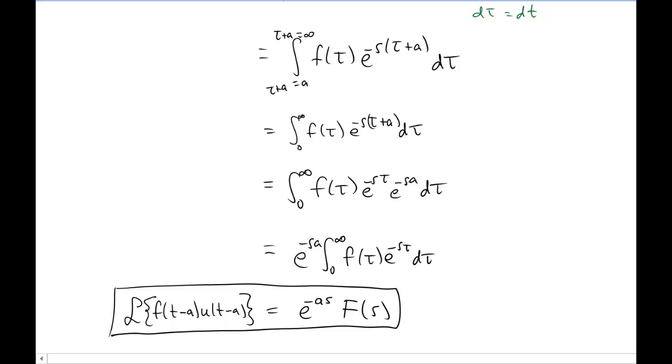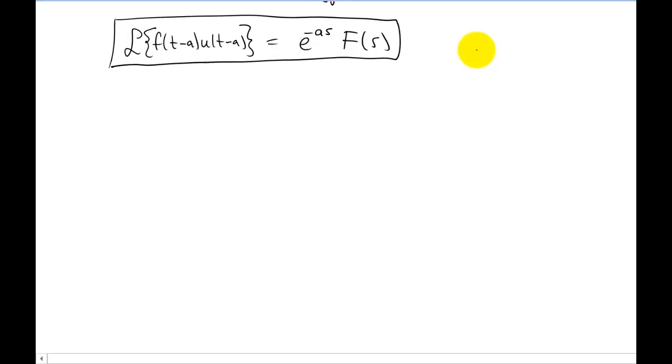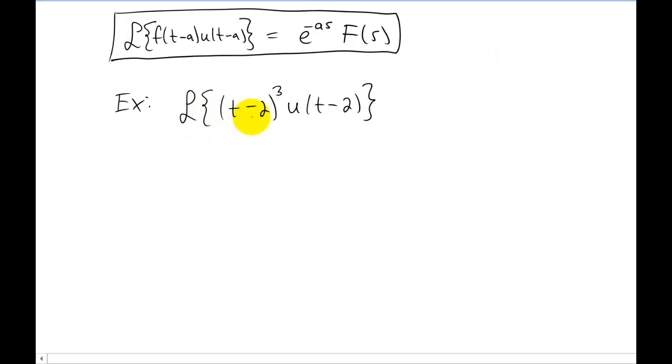Let's do a quick example on how to actually use this new formula we have. Let's start by finding the Laplace transform of t minus 2 quantity cubed times the step function with the t minus 2 in there. Now obviously since we have a step function times another function right here, this is going to be the entry in the Laplace transform table that we're going to end up using. So let's compare our problem with the entry in the table. I think it's pretty obvious that our a value is going to be 2.